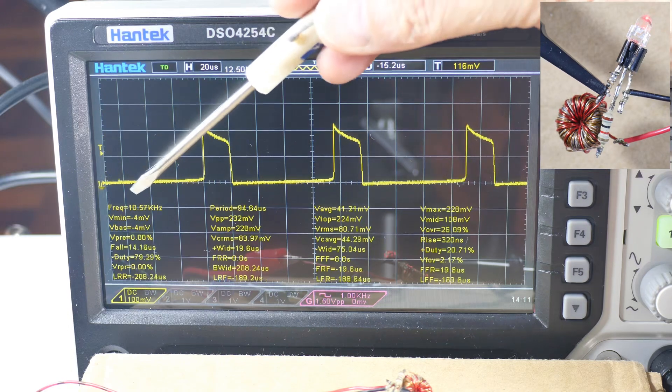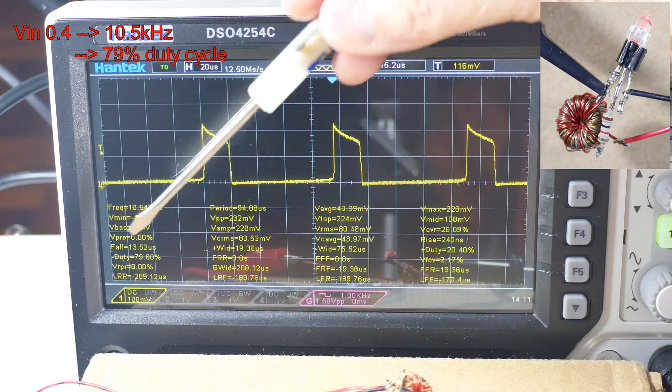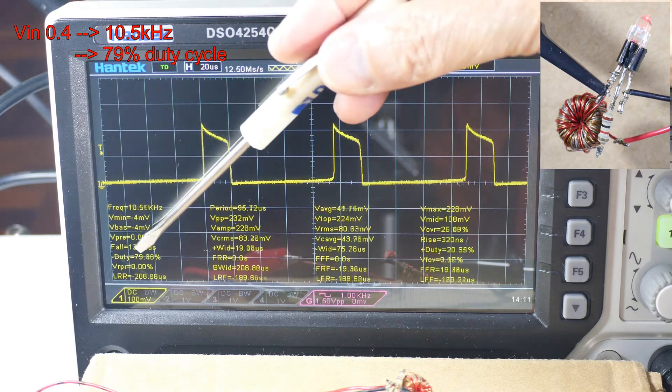0.4 is 10.5. Now we look at the duty cycle has gone from roughly 50% to about 80%.